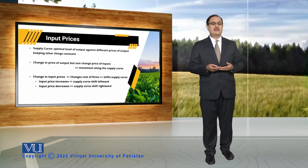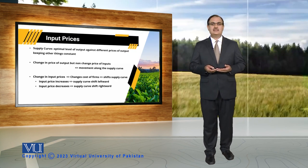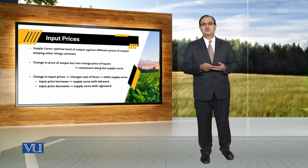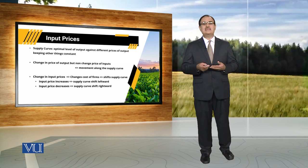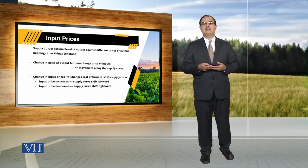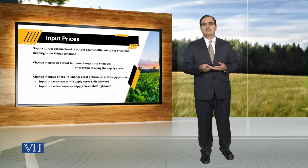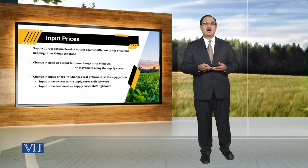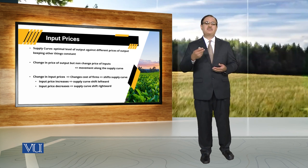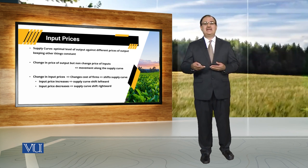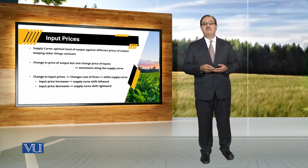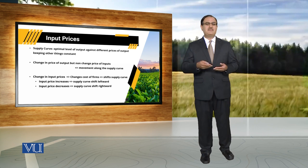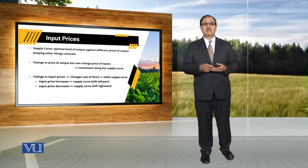Ab usi cheez ko understand karne ke liye, jab humne supply curve ki baat ki thi, humne kaha tha: supply curve is a curve that shows optimal level of output of a commodity against different prices of output while keeping other things constant. Lekin jab change hota hai, there is only change in price of output. Whenever there is change in price of output, there is change in quantity supplied of that particular commodity while there is no change in price of input. Or is saare mein kya hoti thi — movement along the supply curve.